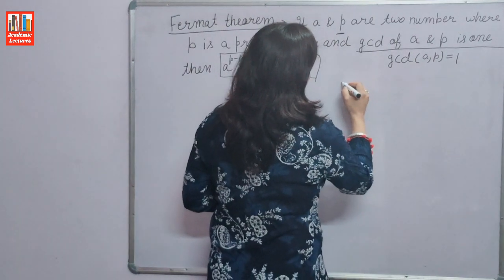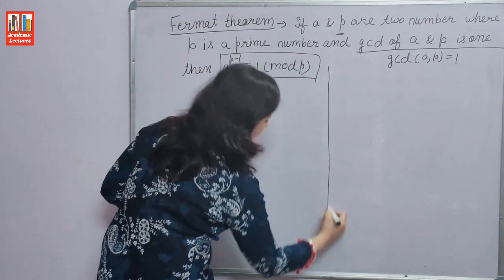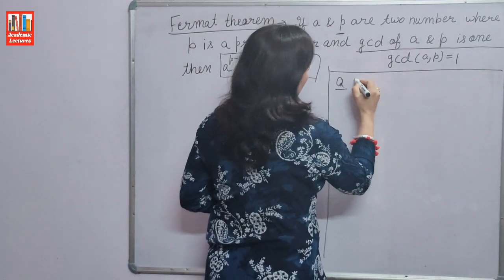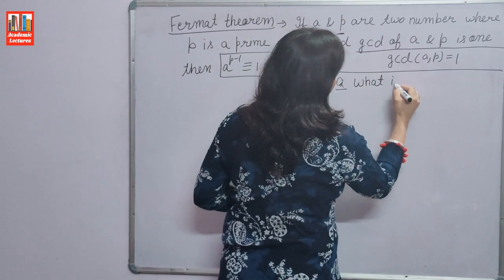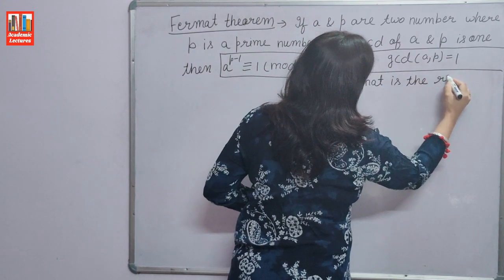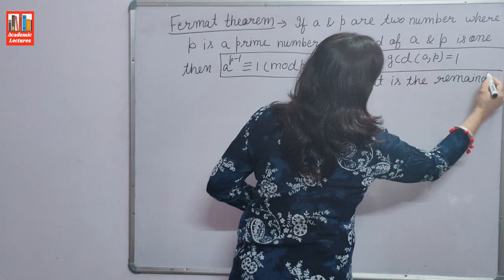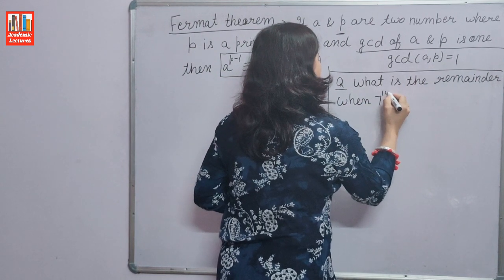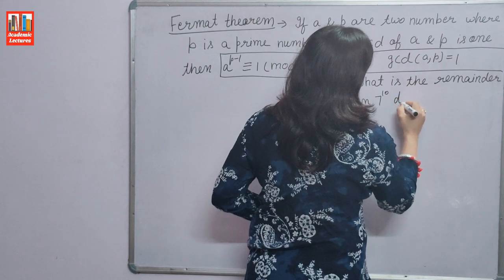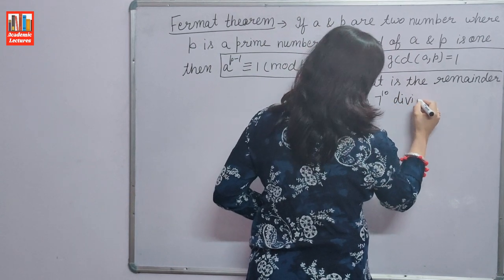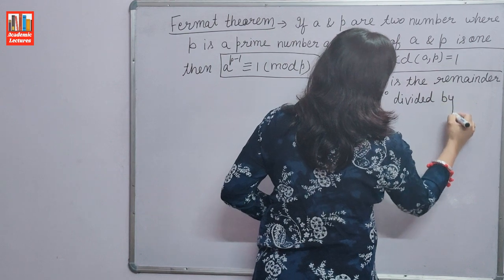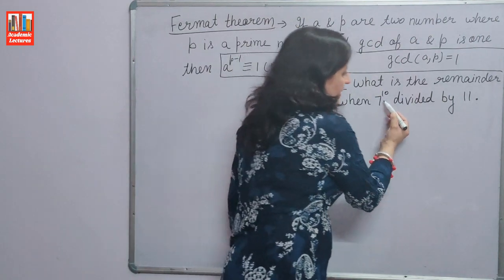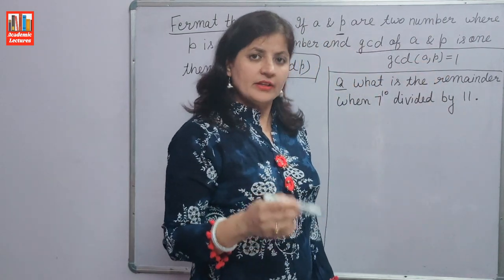For example, what is the remainder when 7 raised to the power 10 is divided by 11? That is, if 11 divides 7 raised to the power 10, what will be the remainder?